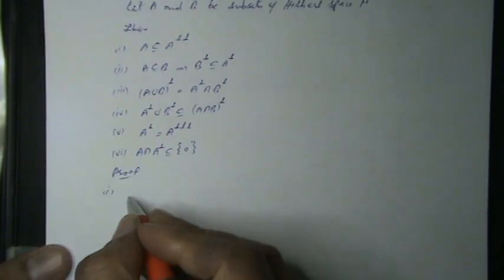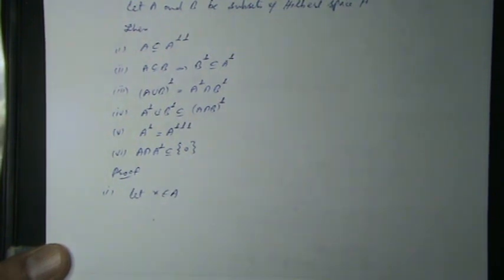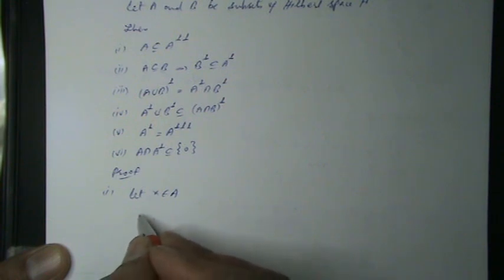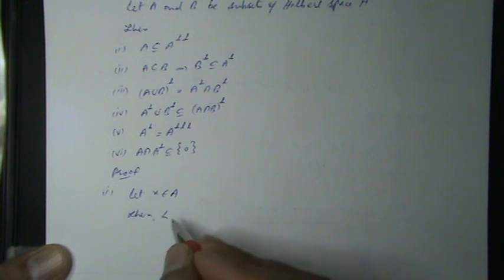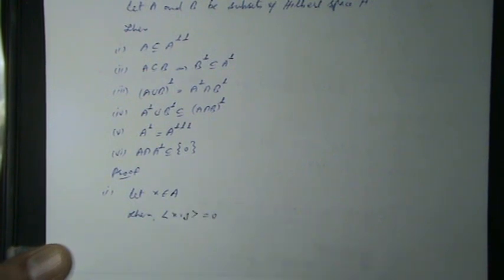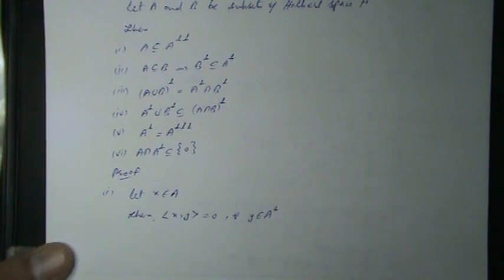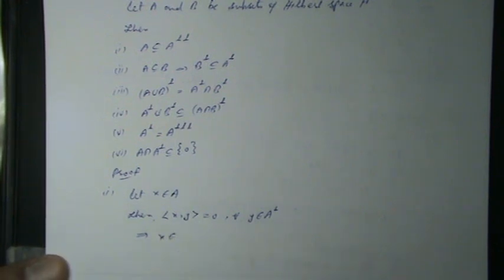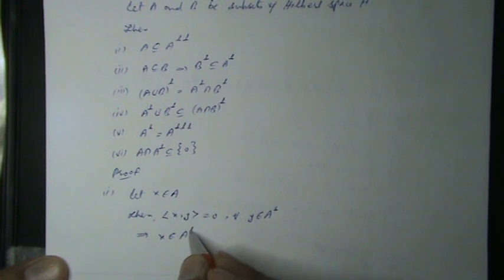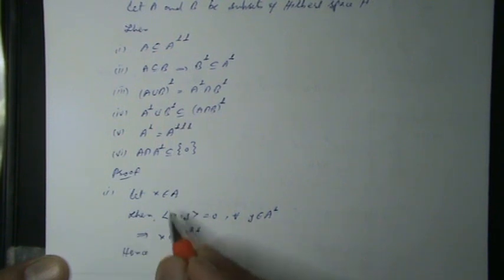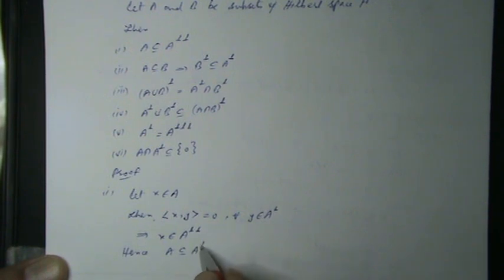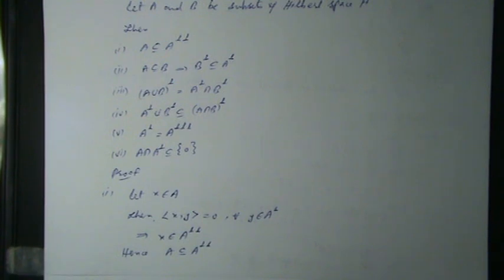Proof of First: Let x belong to A. Then we can write the inner product of x with y equals zero for all y belonging to A⊥. This implies x belongs to A⊥⊥ (the double annihilator). Hence A is contained in A⊥⊥. Hence the proof of the first property.